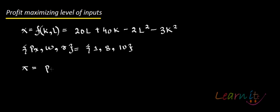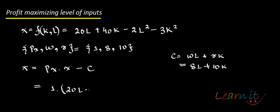How do you write the profit function? Profit function is PX times X, which is the total revenue, minus cost. Cost is given as WL plus RK, which is 8L plus 10K. So you have 1, and in place of X you'll write this production function, which is 20L plus 40K minus 2L squared minus 3K squared minus this cost function 8L plus 10K.